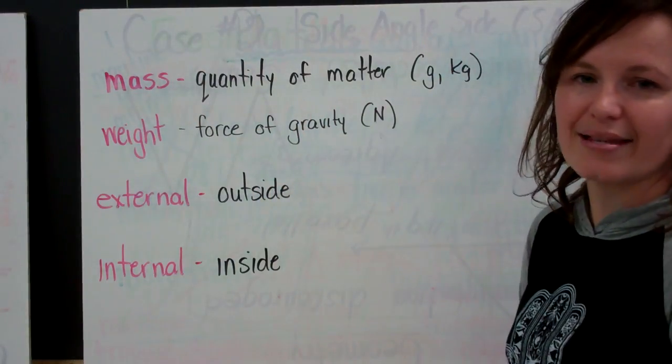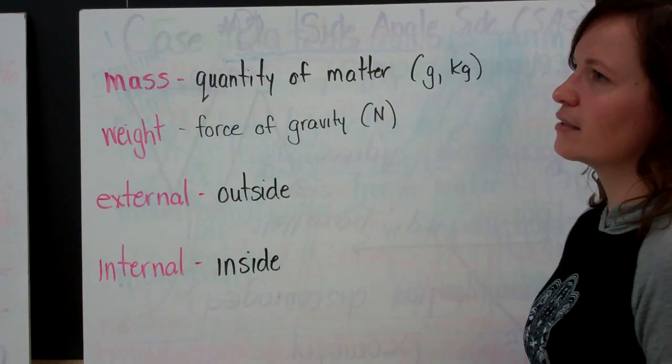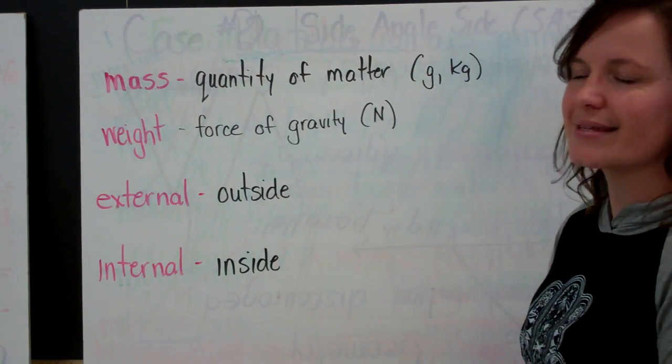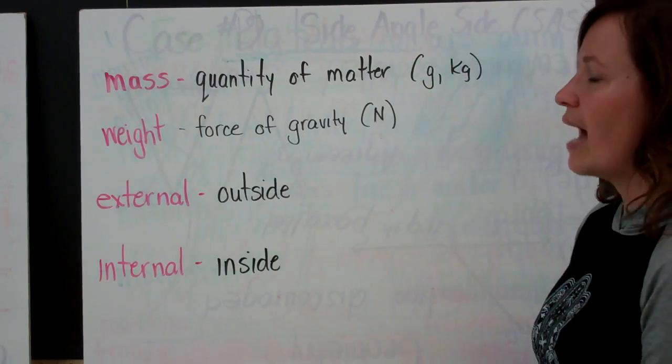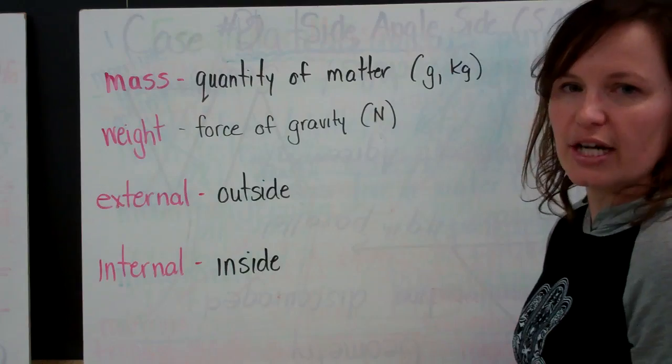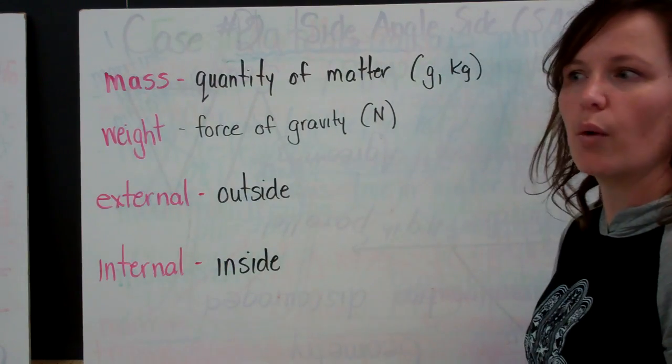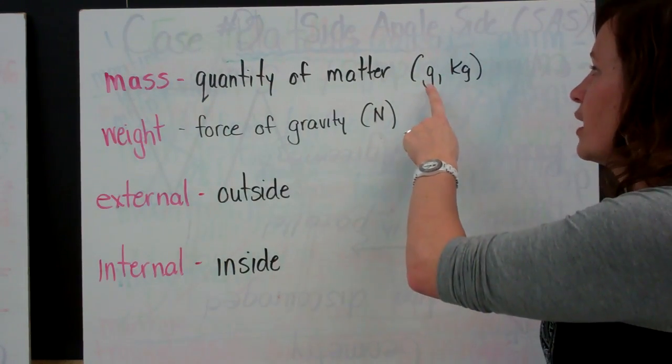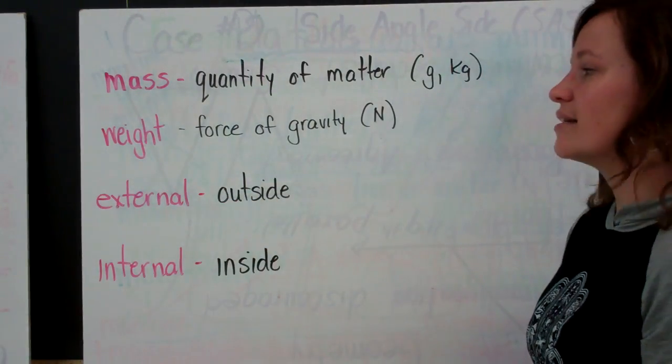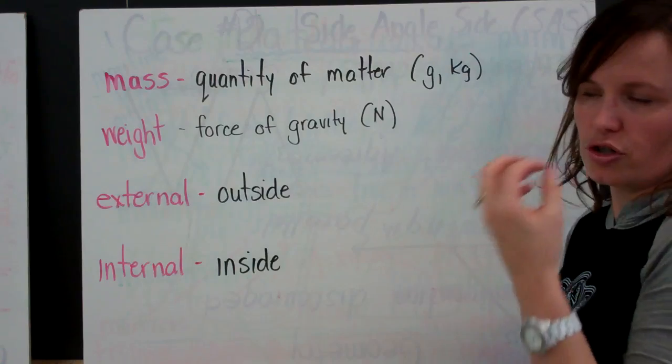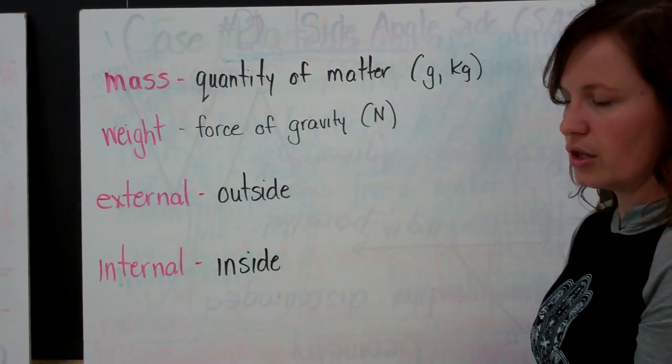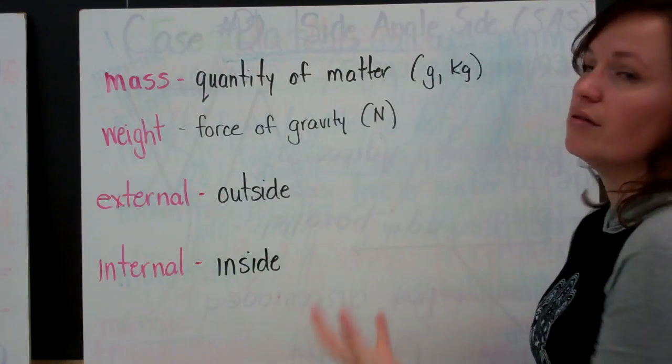So we were talking about mass and weight. And this is, it's a little confusing because we always talk about how much we weigh and what our weight is. And that's actually an incorrect term. The actual definition of mass is the quantity of matter that an object has. This is what we're measuring when we stand on the scale. We're measuring it in grams or kilograms. The weight is the force of gravity on the structure. So on our bodies as it's being pulled towards the earth's surface. And that's measured in newtons.